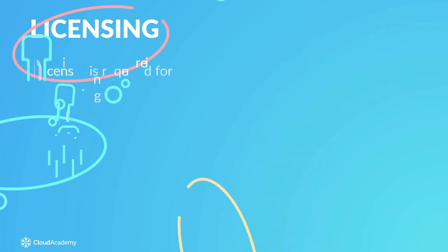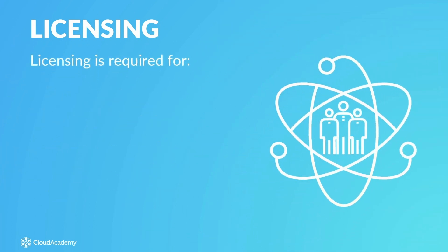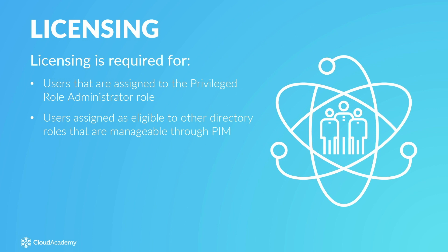Generally speaking, licensing is required for users that are assigned to the Privileged Role Administrator role or who are assigned as eligible to other directory roles that are manageable through Privileged Identity Management. If a user can approve or reject requests in PIM, that user also requires a license.